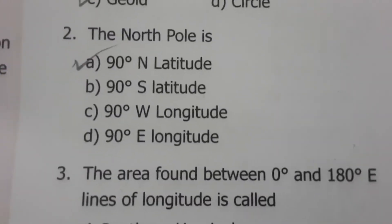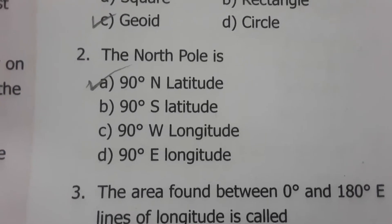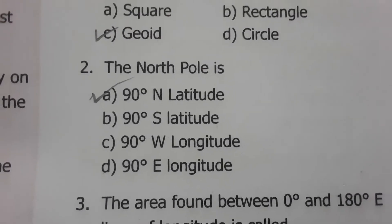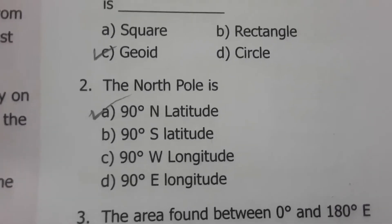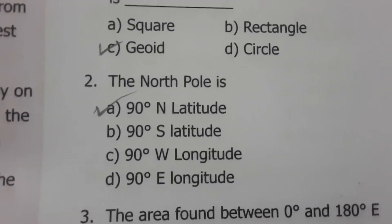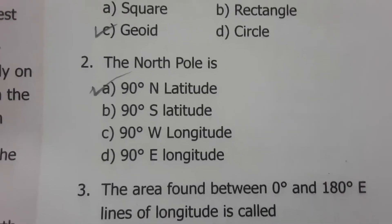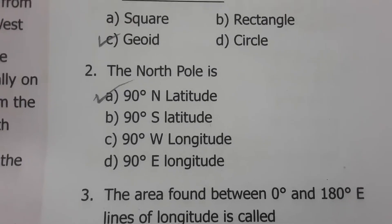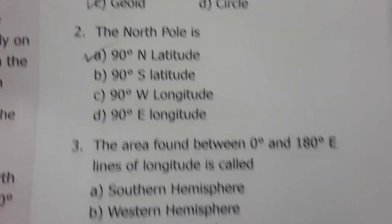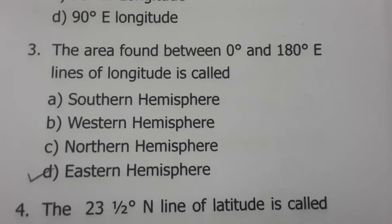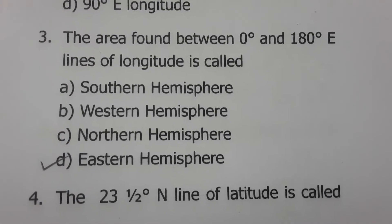The North Pole is at 90 degrees North latitude. Latitudes are the parallel lines found on the globe, whereas longitudes are vertical lines. 90 degrees latitude always falls on the polar region — if it is North, it is the North Pole; if it is South, it is the South Pole. The area found between 0 degree and 180 degree eastwards lines of longitude is called the Eastern Hemisphere.